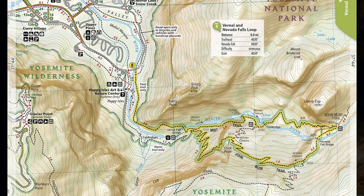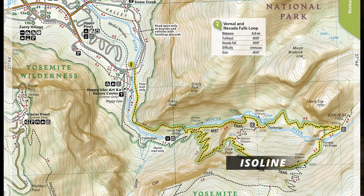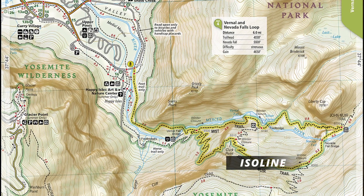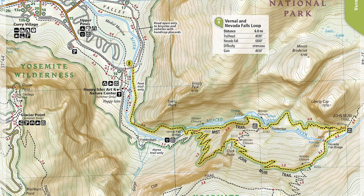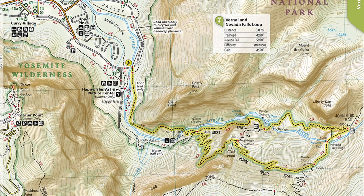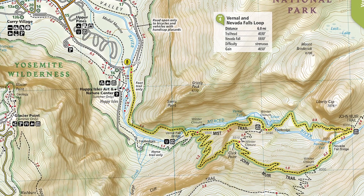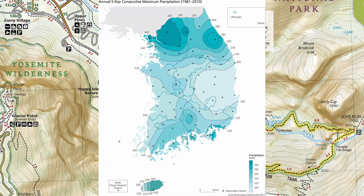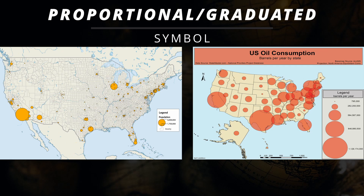There's also the isoline map, where the theme will be elevation. If you've ever gone backpacking and utilized a map to navigate through the mountains, you've dealt with these before — each line represents a different level of elevation, and these maps are also common with climate and temperature. We also have the proportional symbol map, also known as a graduated symbol map, which utilizes a symbol or shape and uses its size to determine quantities of whatever theme. You can see the size of the circle determines population size, and larger circles represent higher oil consumption.